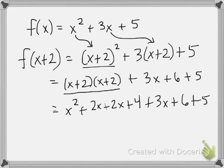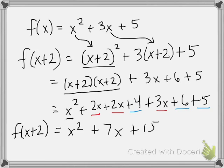And now I want to combine my like terms. What do I have? Well, I have an x squared. Where are my plain old x terms? Here's an x term, here's an x term, and here's an x term. So I have 2x plus 2x plus 3x gives me plus 7x. And then my numbers, I've got plus 4 plus 6 plus 5 gives me plus 15.